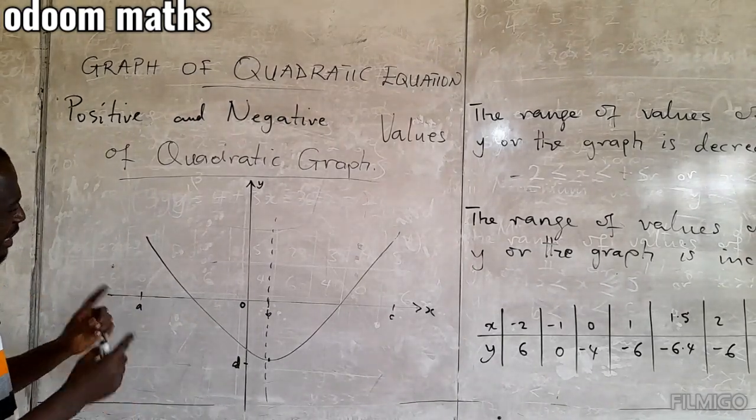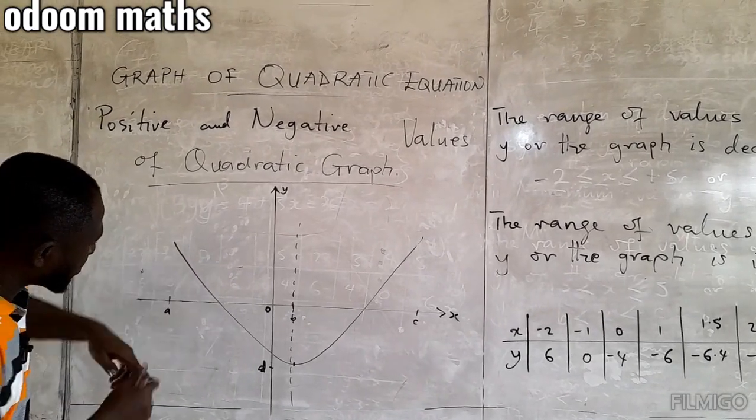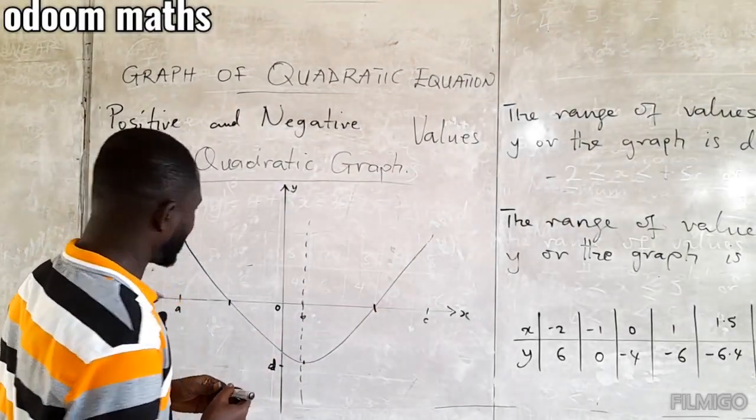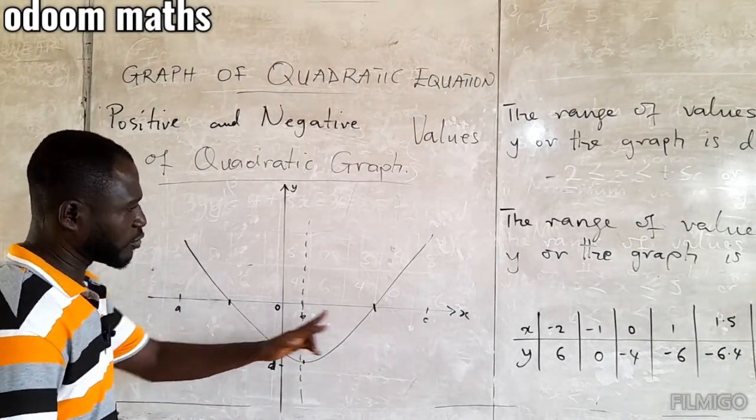So, looking at this, we can see that the values here are from this point to this point. Then, below it also from this point to this point.